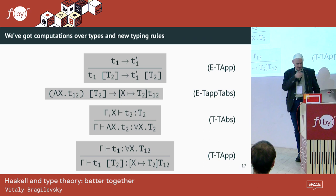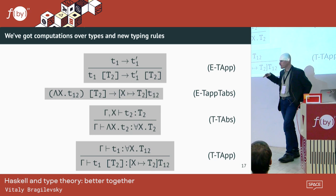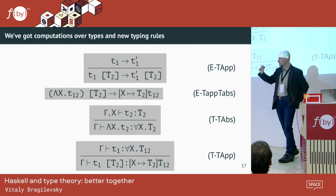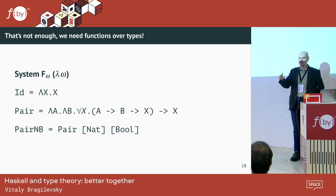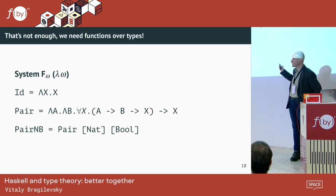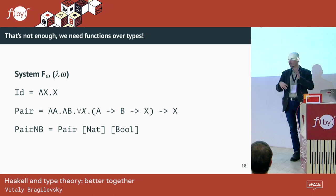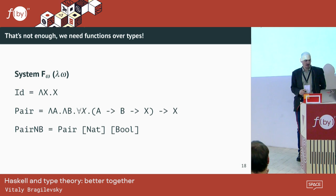In System F you have two lambdas — big lambda and small lambda — and two kinds of application: for terms and for types. Even more, some people introduced System F omega, which adds computations over types. Now you can create much more sophisticated types like pairs or lists of something.